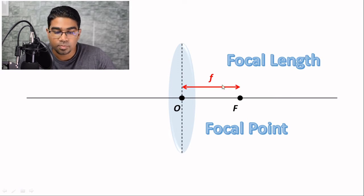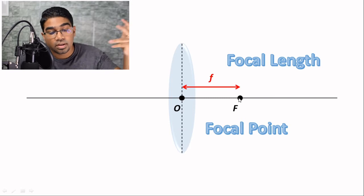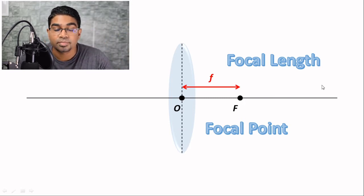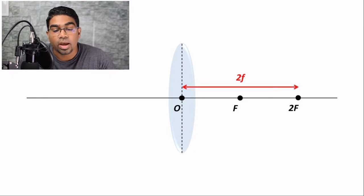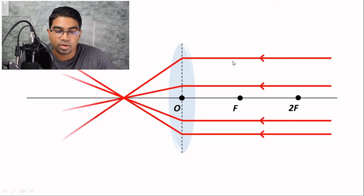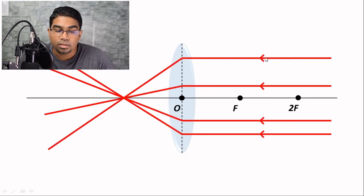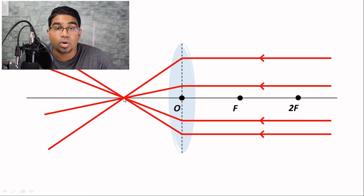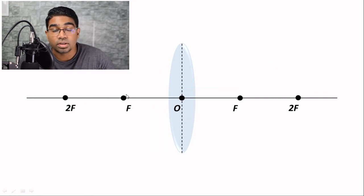These two are not to be confused: small f is focal length, big F represents the focal point — the single point where all light coming from a very distant object, traveling parallel, is converged. We have another reference point known as 2f, which is simply a distance of two focal lengths from the optical center. Light can come from the left or the right side of the lens, and the convex lens will converge all the light into a single focal point. So we have focal point and 2f on both sides of the lens.